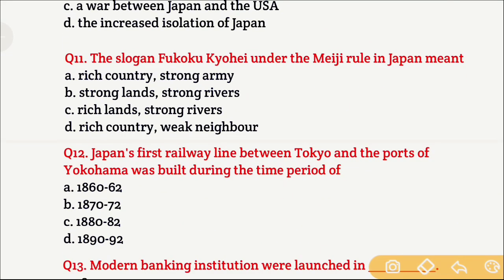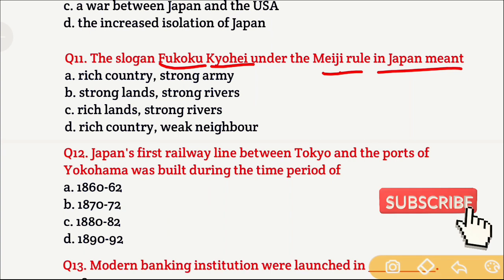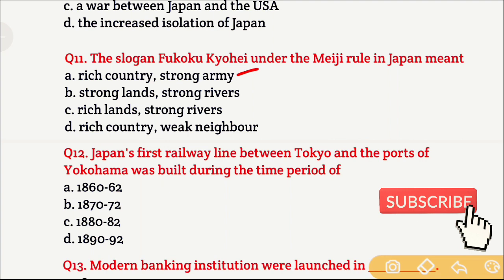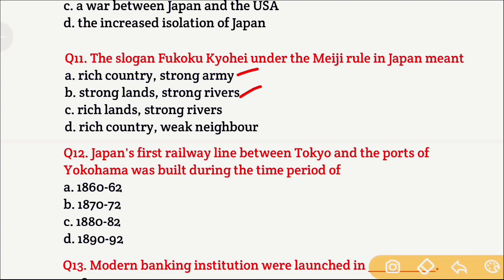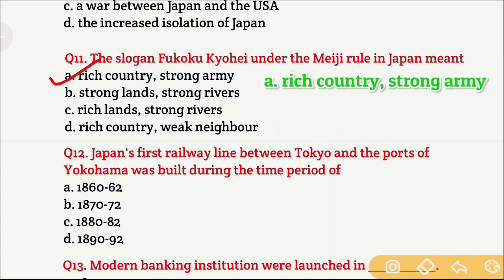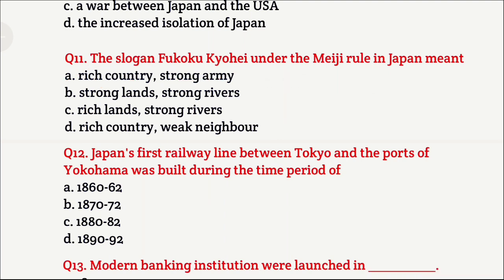Question 11: The slogan 'Fukoku Kyohei' under the Meiji rule in Japan meant — during the Meiji Restoration, a policy was introduced with the slogan 'Fukoku Kyohei.' Option A is rich country and strong army, Option B is strong lands and strong rivers, Option C is rich lands and strong rivers, Option D is rich country and weak neighbor. The right answer is Option A — rich country and strong army.